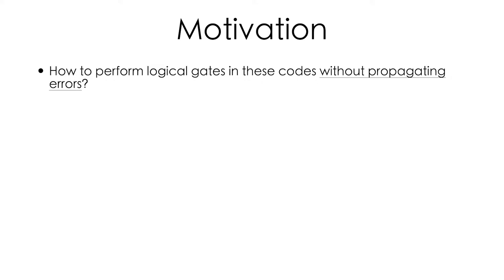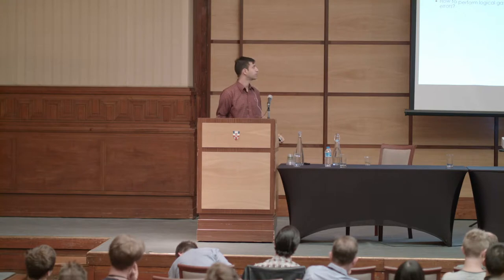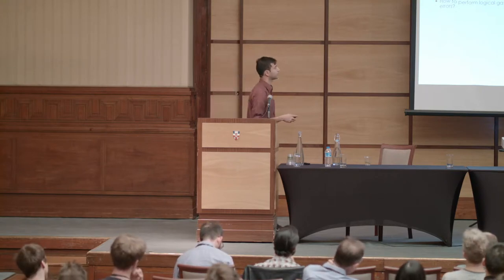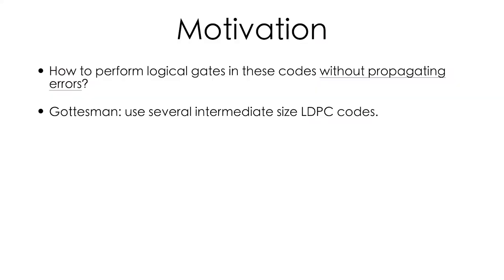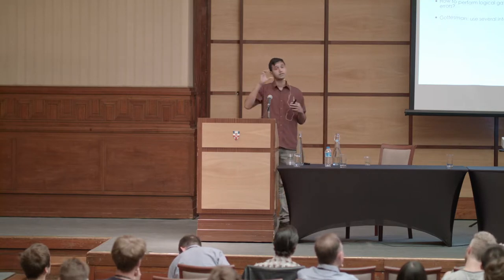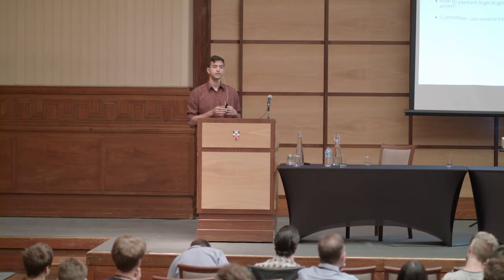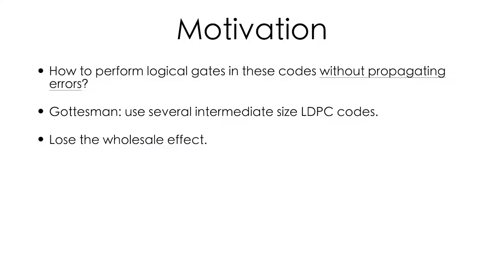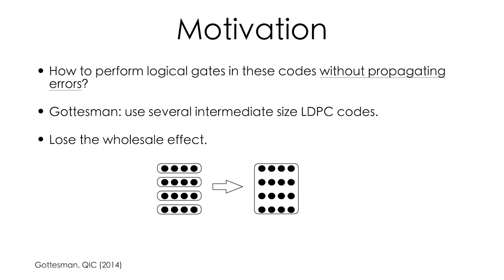These works have shown that hypergraph product codes perform very well. The next question is how do we perform logical gates on these codes without propagating errors? There was a proposal by Dan Gottesman where he suggested considering block codes — by encoding more than one qubit in a given block and breaking your code into several intermediate-sized blocks, you can take advantage of the wholesale effect. The objective was to perform gates via state injection, and the size of the ancilla depends on the size of the intermediate-sized blocks. What we're talking about today is a way to perform gates on these codes using one single block.